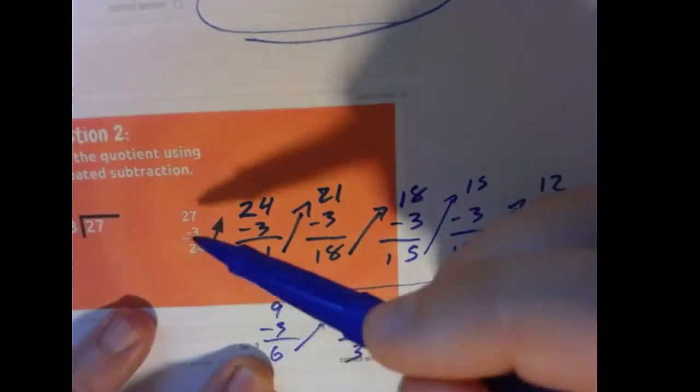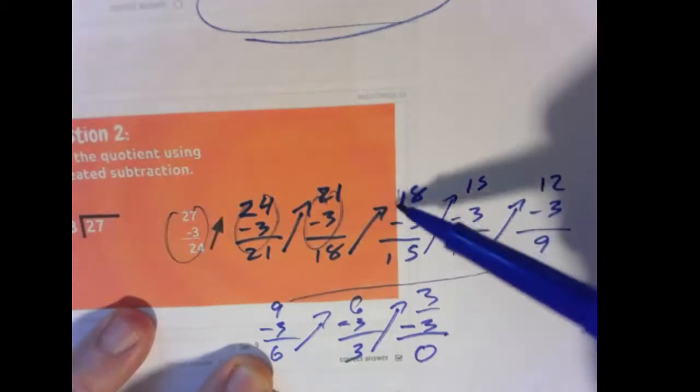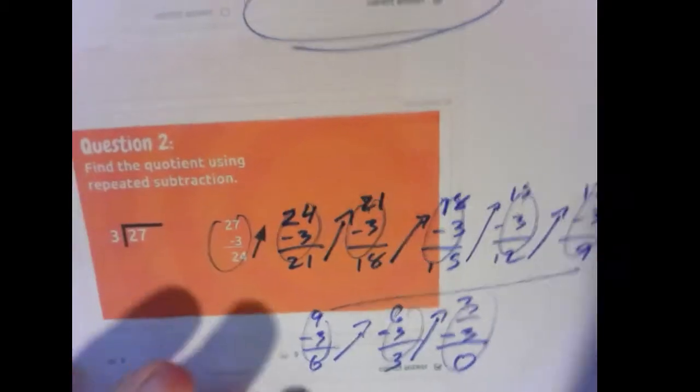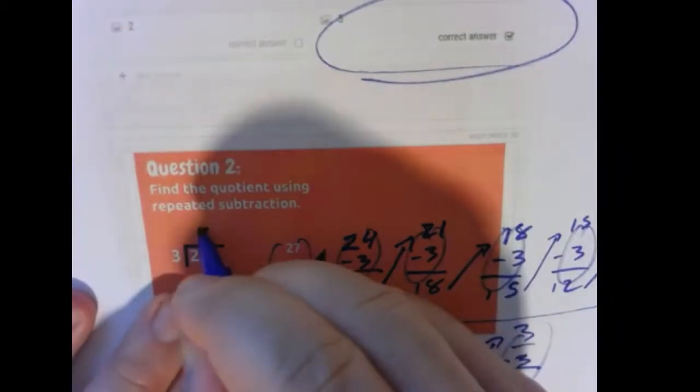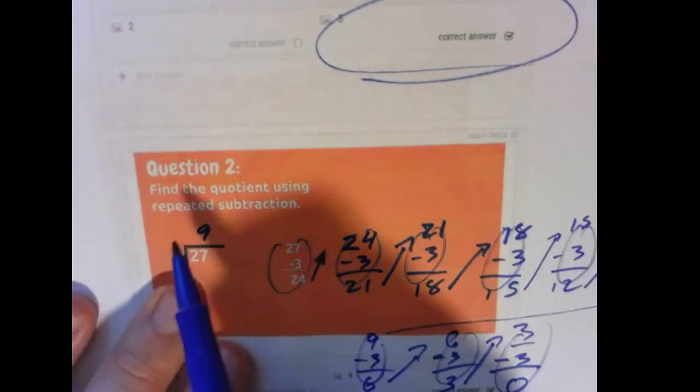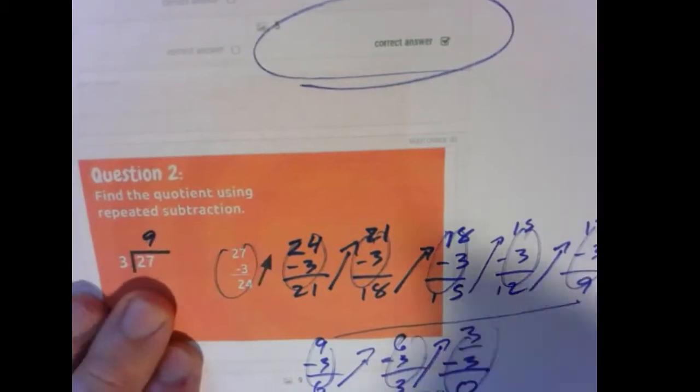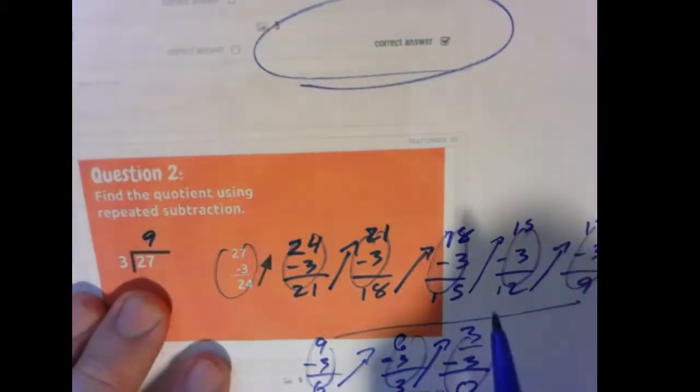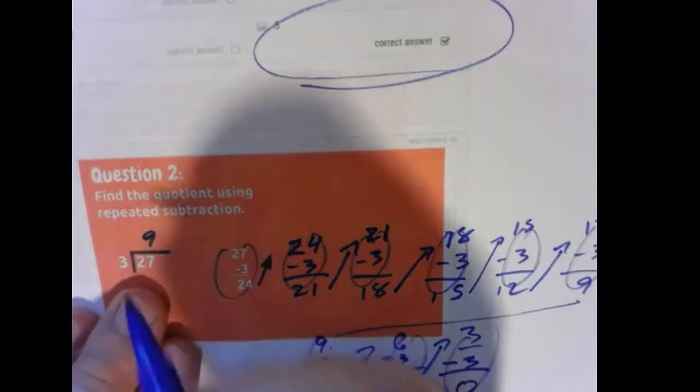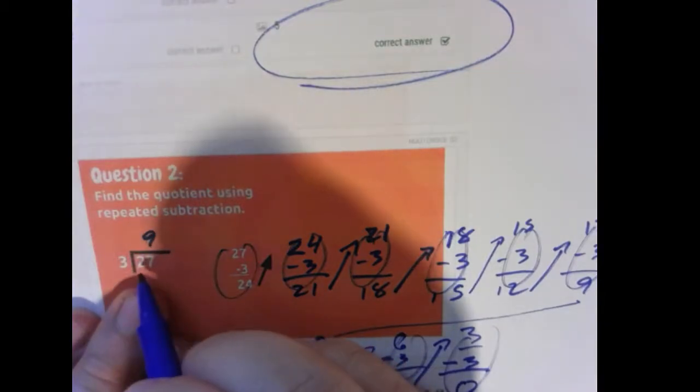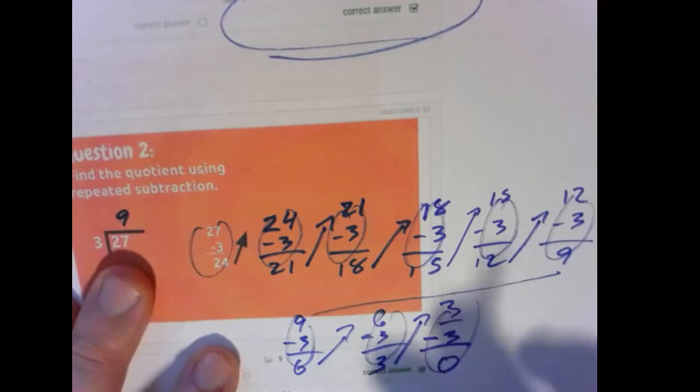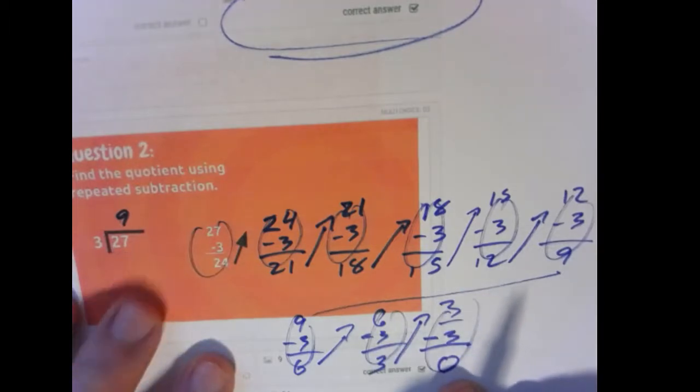So how many operations did we do? 1, 2, 3, 4, 5, 6, 7, 8, 9. Right? Does that make sense? 9 times 3 makes 27. 27 divided by 3 gives us 9. So going through 9 cycles of subtracting 3 from 27 gets us all the way down to allocating all of those pieces.